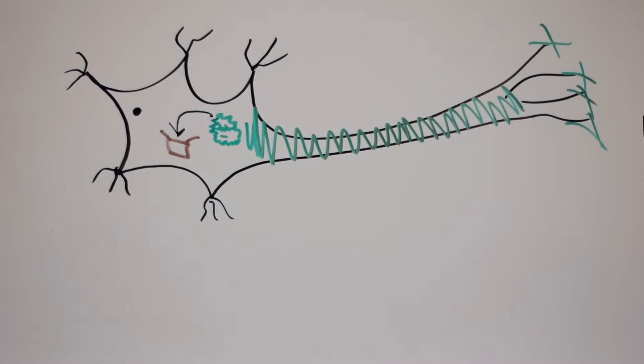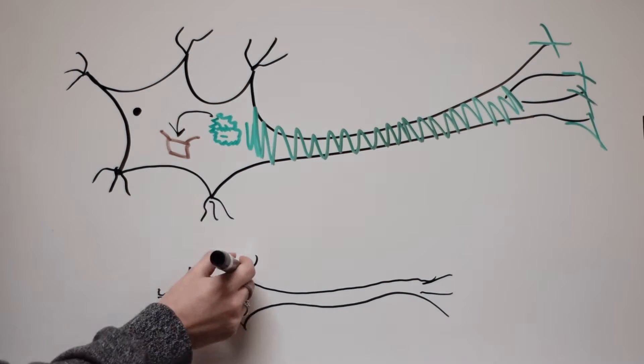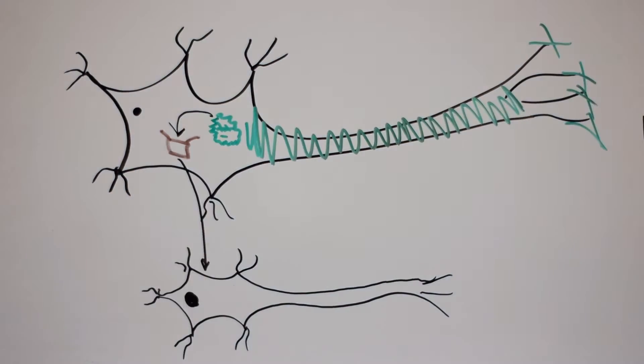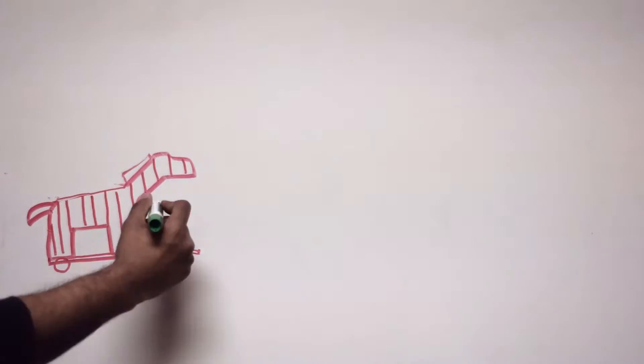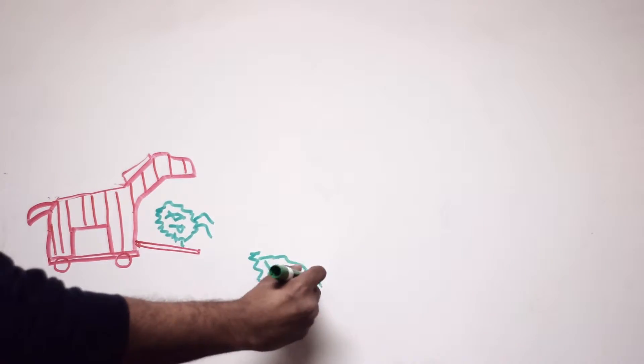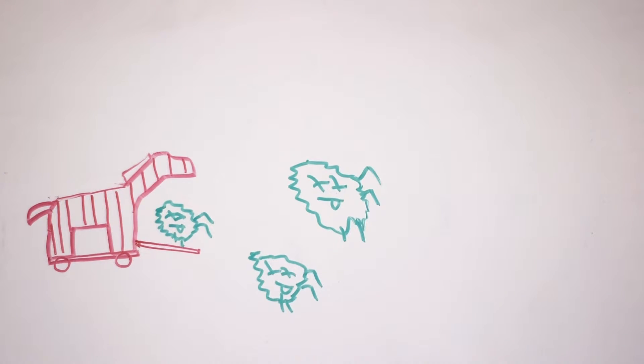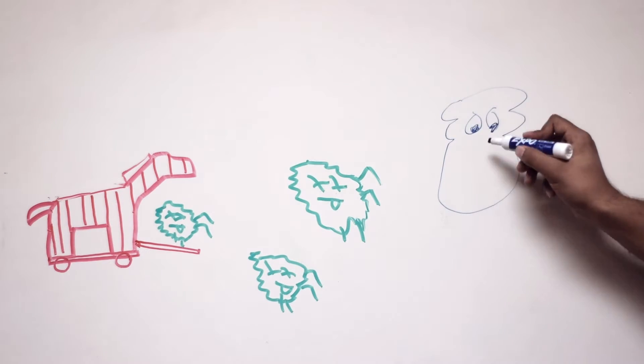While doing this, they also start transporting themselves to other cells using various methods such as vesicles and nanotube channels. A vesicle is very similar to packages that cells would send to one another, so in the case of a prion, it's like a trojan horse.